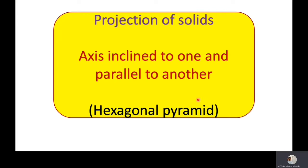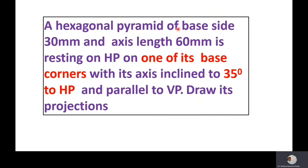The given problem: a hexagonal pyramid of base side 30 mm and axis length 60 mm is resting on HP on one of its base corners, with its axis inclined at 35 degrees to the HP and parallel to VP. Draw its projections.